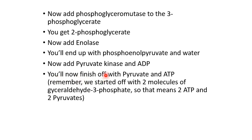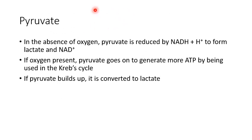We add pyruvate kinase and ADP, take away the phosphate from phosphoenolpyruvate, add it to ADP to make ATP, and we get the end product pyruvate. Since we started with two molecules, this reaction happens twice for every glucose molecule, giving us two pyruvates and two ATP, plus two ATP from the previous substrate-level phosphorylation step.